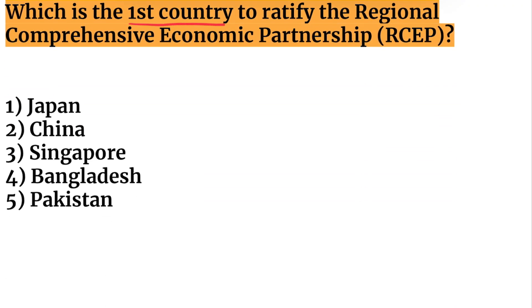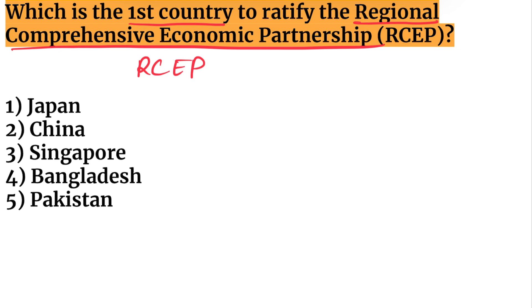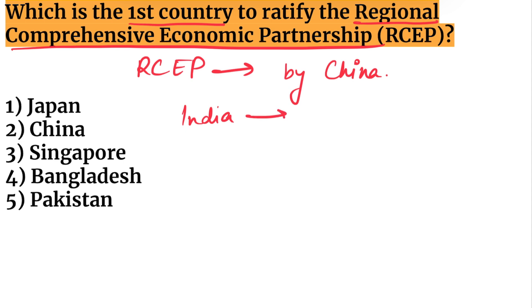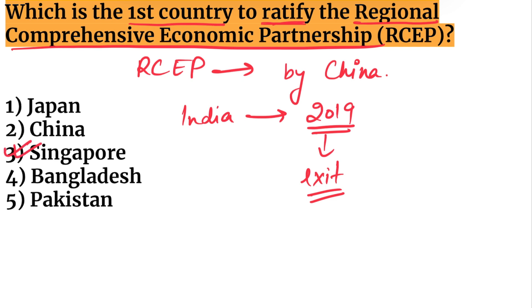Which is the first country to ratify the RCEP — Regional Comprehensive Economic Partnership? RCEP was an initiative by China. India was part of RCEP until 2019 but exited. The first country to ratify the RCEP is Singapore.